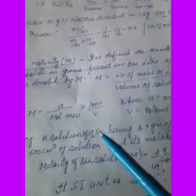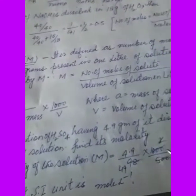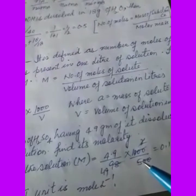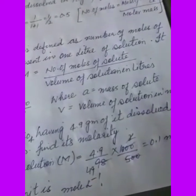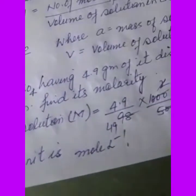For example, a solution of H₂SO₄ having 4.9 grams dissolved in 500 cubic centimeters of solution: molarity equals 4.9 divided by 98 (molar mass of H₂SO₄), multiplied by 1000/500, which equals 0.1 molar. The unit of molarity is mol L⁻¹.